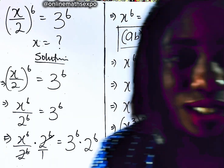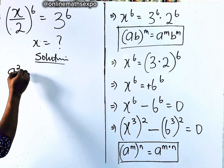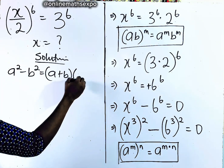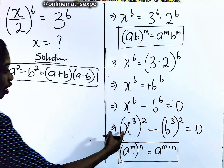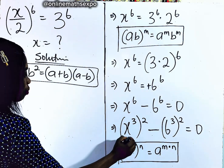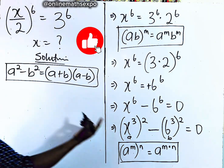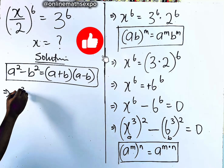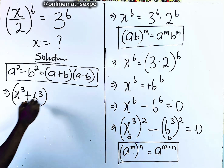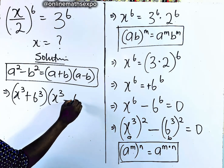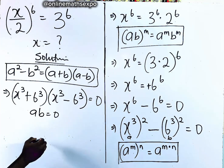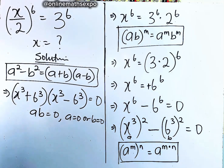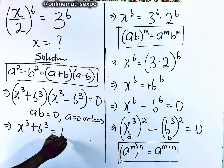Quickly remember that identity: for every a squared minus b squared, it equals (a + b)(a − b). This is our difference of two squares. Looking at our expression, (x cubed) squared minus (6 cubed) squared fits this form exactly, where a is x cubed and b is 6 cubed. Applying this rule, we now have (x cubed + 6 cubed)(x cubed − 6 cubed) equals 0. Remember, for a times b to equal 0, either a is 0 or b is 0.